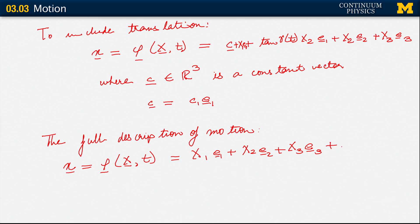Plus tan γₜ X₂E₂ which gives us the shearing displacement plus a translation vector representing the fact that the body was moved along in the E₁ direction.